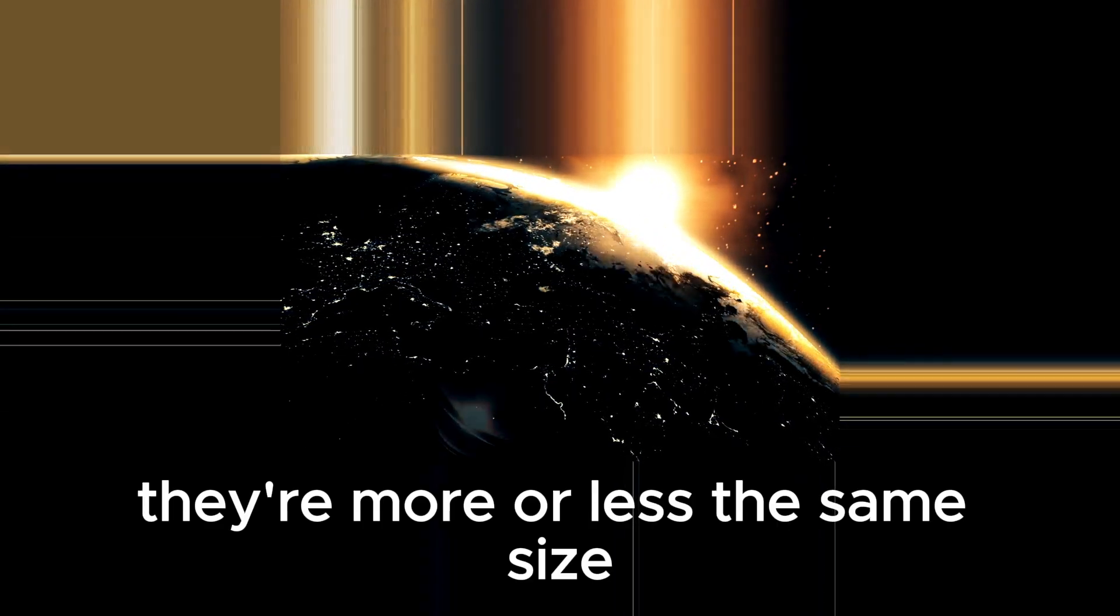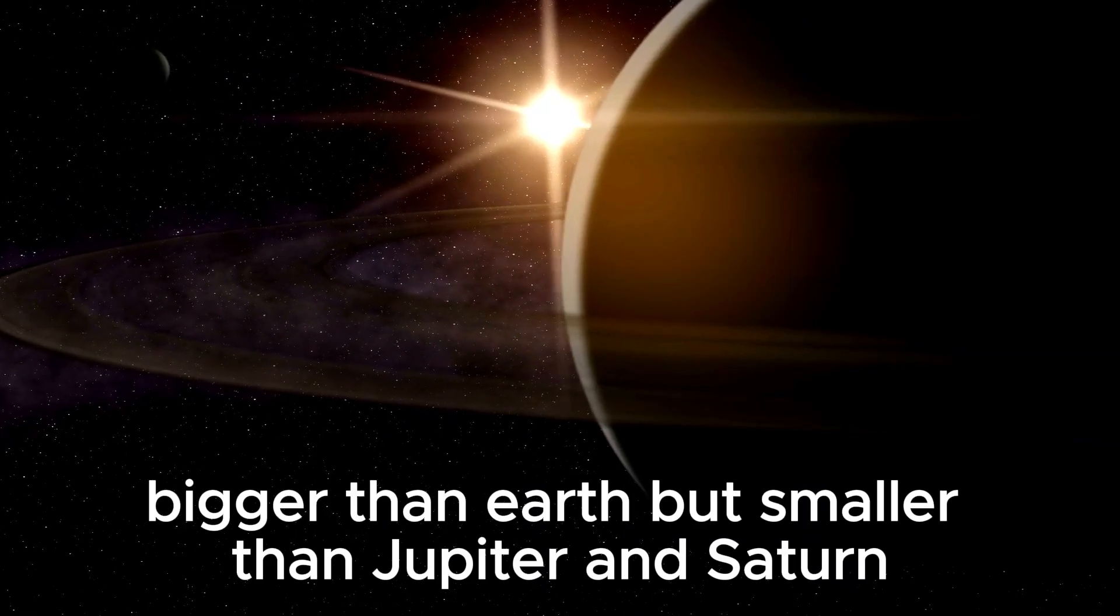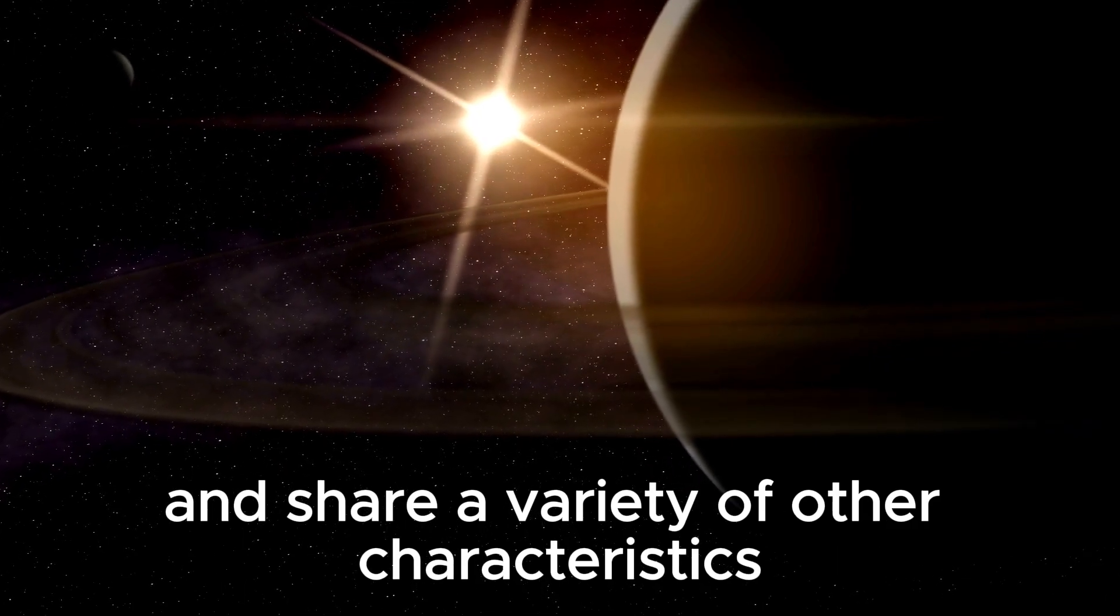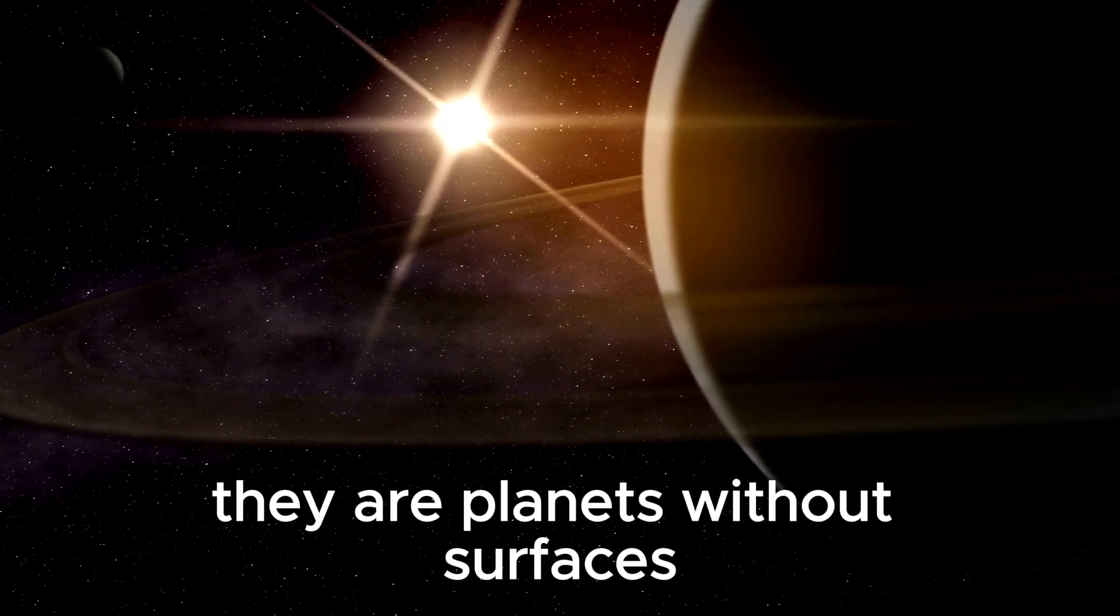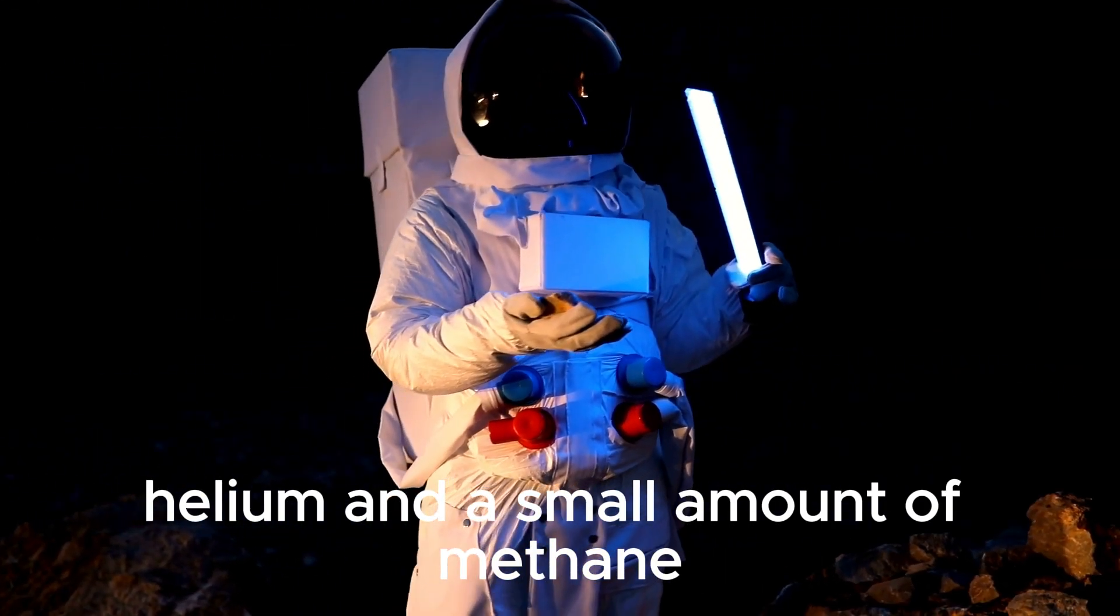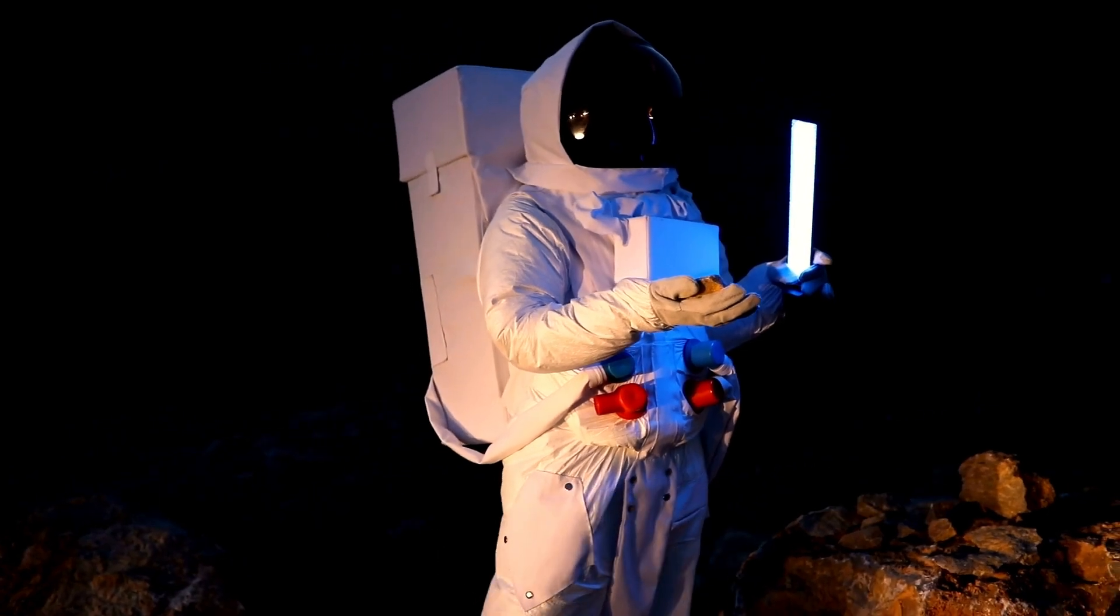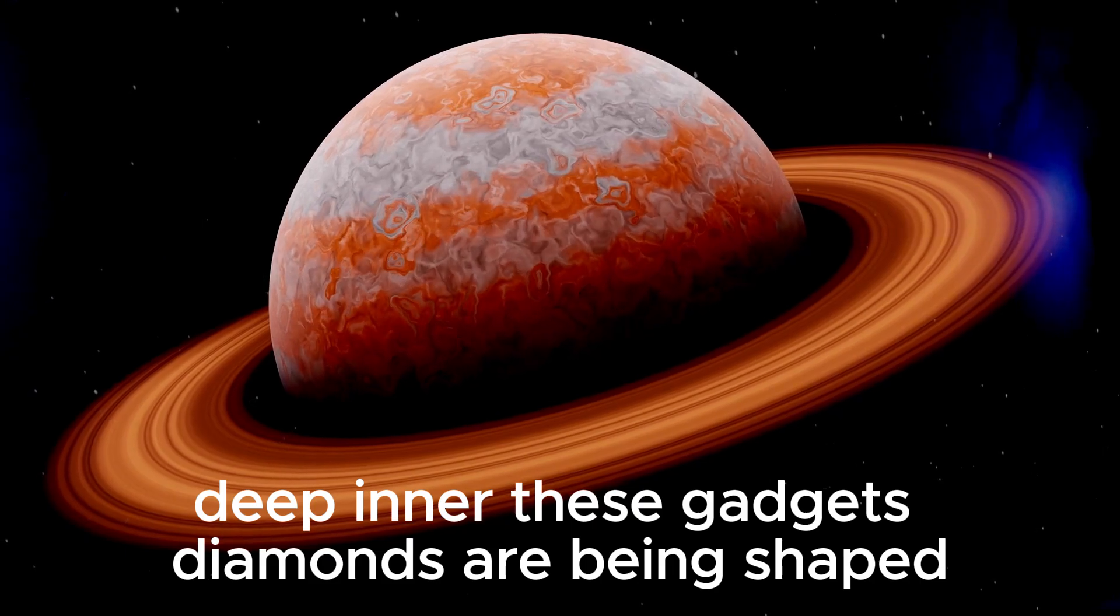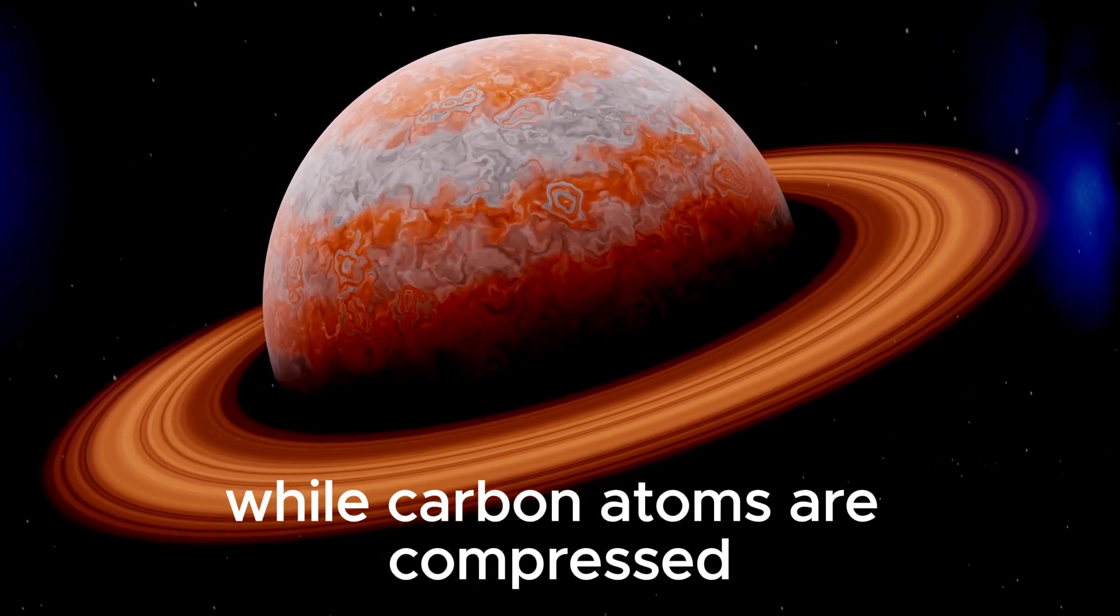They're more or less the same size, bigger than Earth but smaller than Jupiter and Saturn, and share a variety of other characteristics. They are planets without surfaces that have atmospheres made from hydrogen, helium, and a small amount of methane. Scientists trust that beneath extreme stress deep inner these diamonds are being shaped while carbon atoms are compressed.